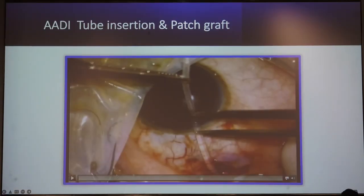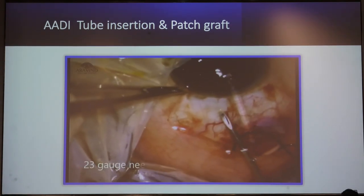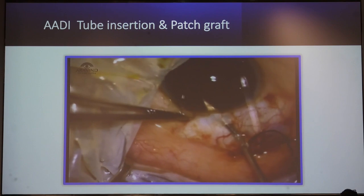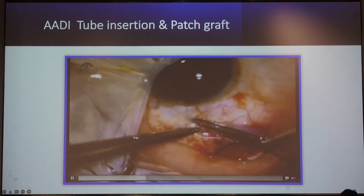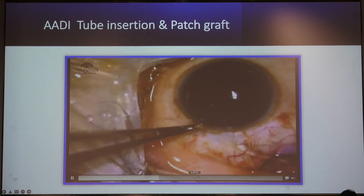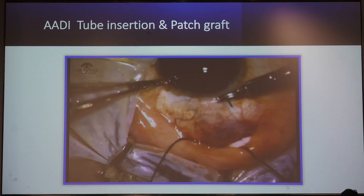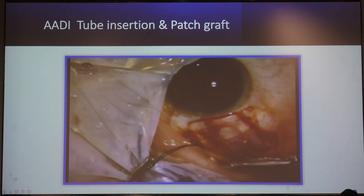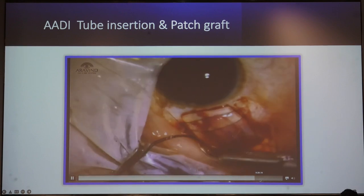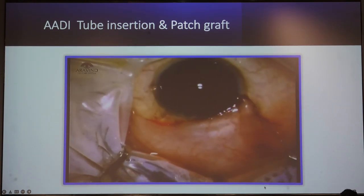In cases where a patch graft is available, the same approach is used. Mark the tube, and the bevel should be facing up. Cut the tube at a 45-degree angle so you get a nice bevel-up position. The tube is then inserted into the anterior chamber. After inserting, take a partial-thickness corneal patch graft, and the patch graft is anchored with nano-nylon suture. Conjunctival closure is then done in a similar fashion.